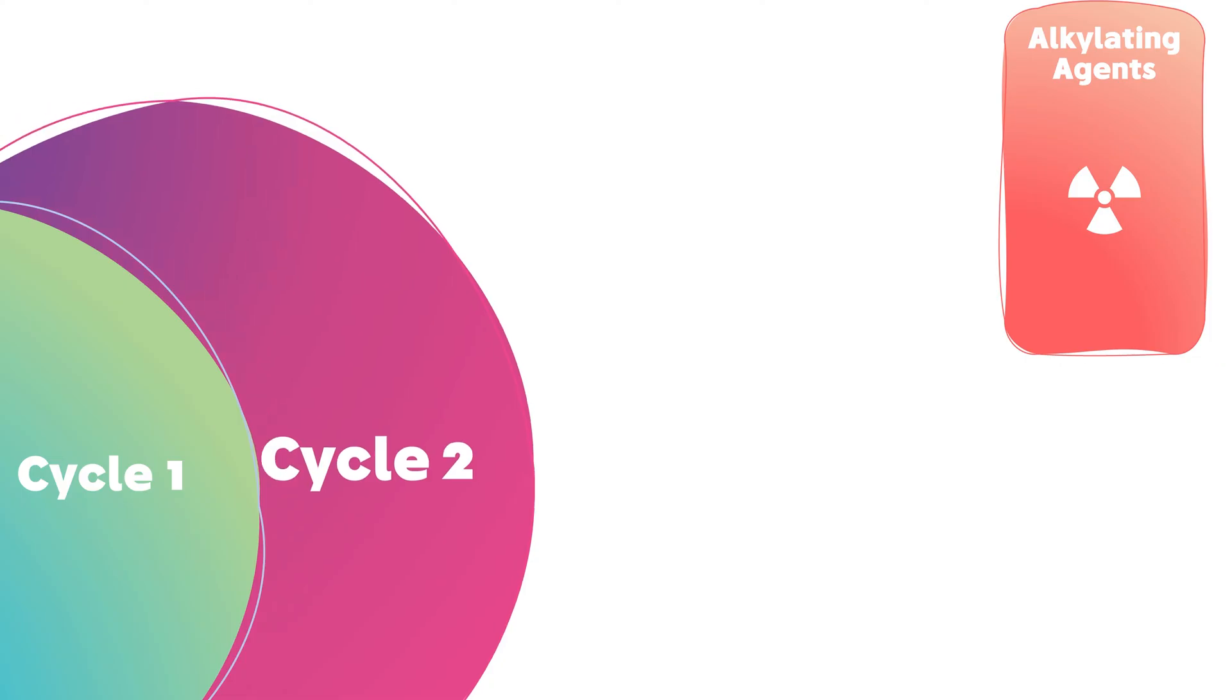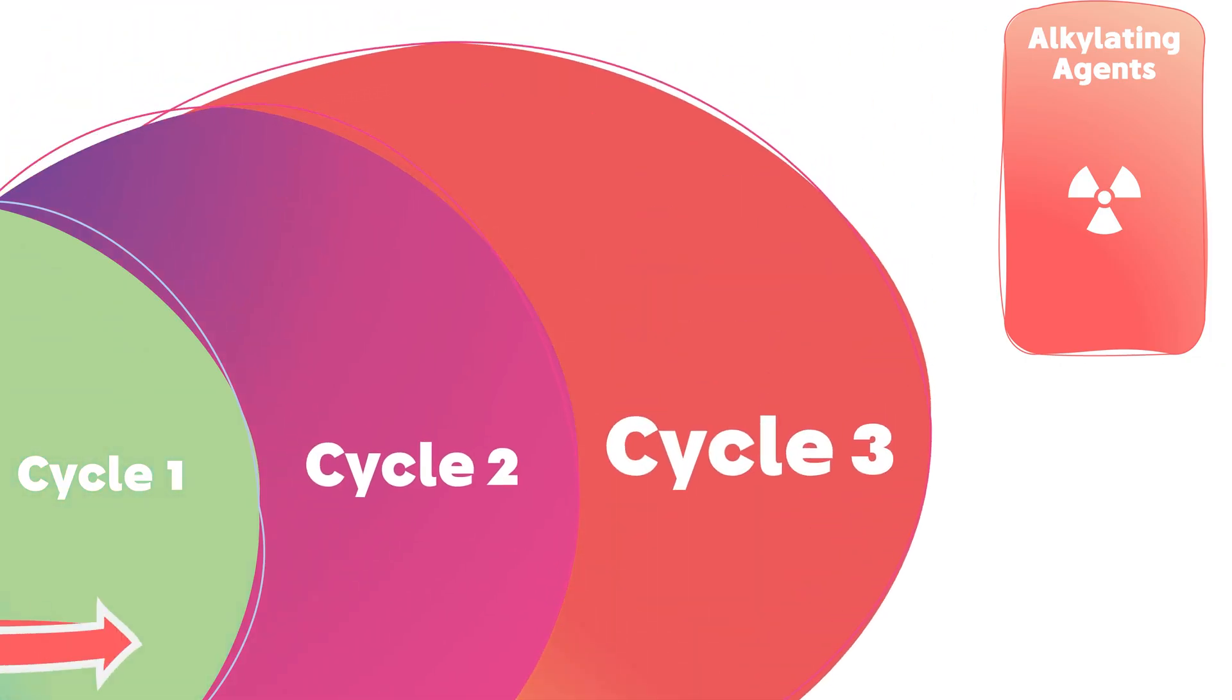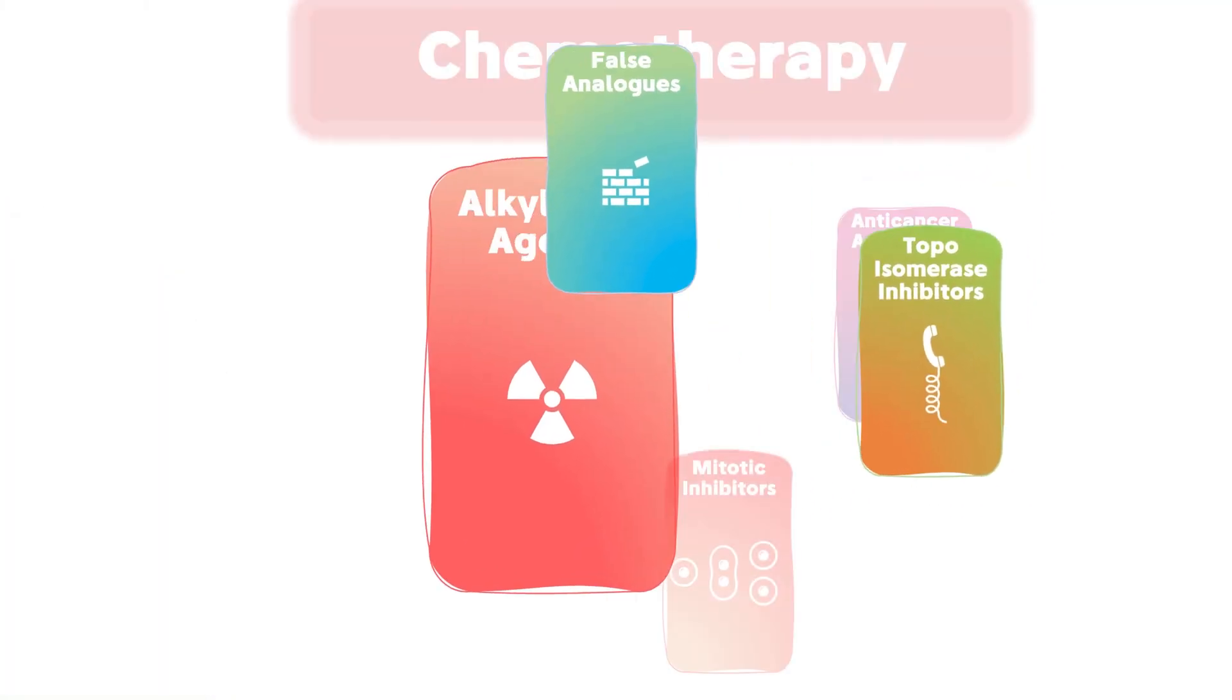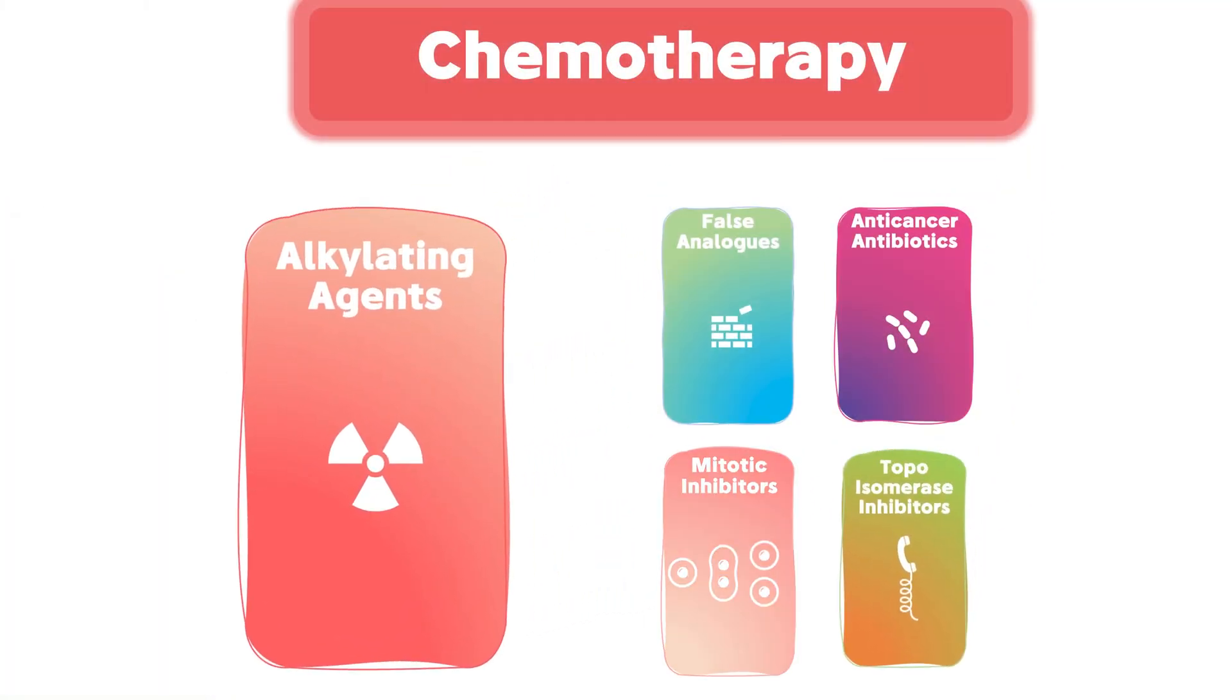We divided the concept into three cycles with increasing level of details. Let's start with the first cycle. Alkylating agents is one of the five families of chemotherapy.